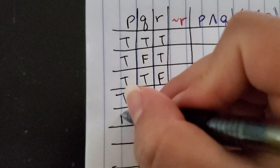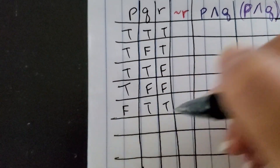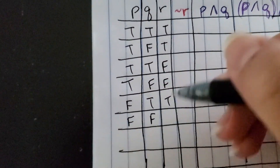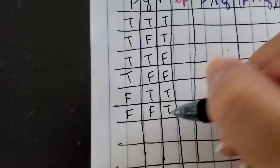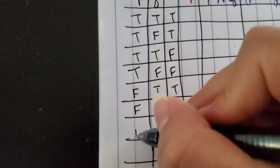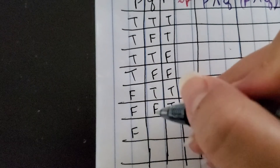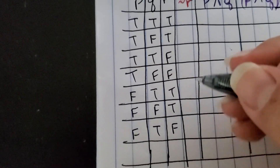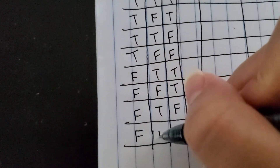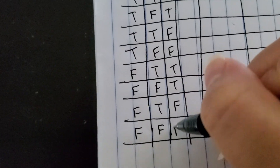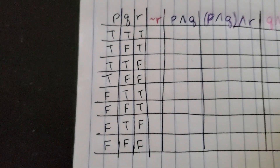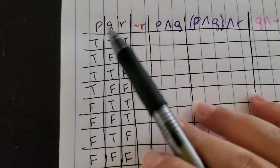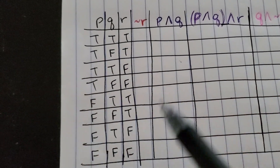Then we can have that P is false and these are both true. We can have that P and Q are false and R is true. And then we can have that P is false, Q is true, and R is false — swap those two. And then we have the possibility where they are all false. These are all the possible combinations for P, Q, and R.